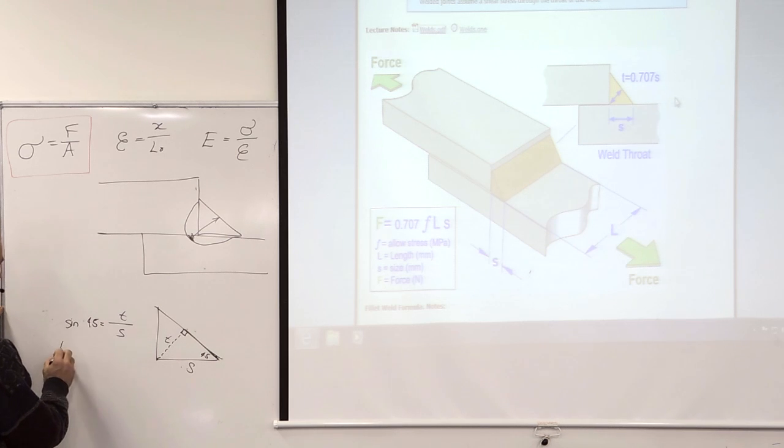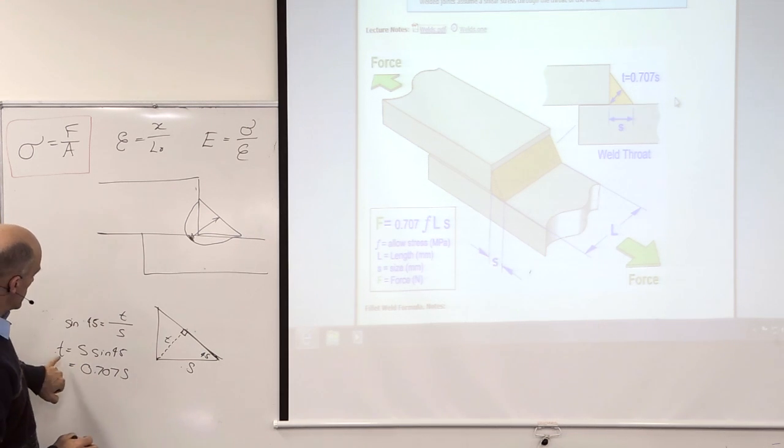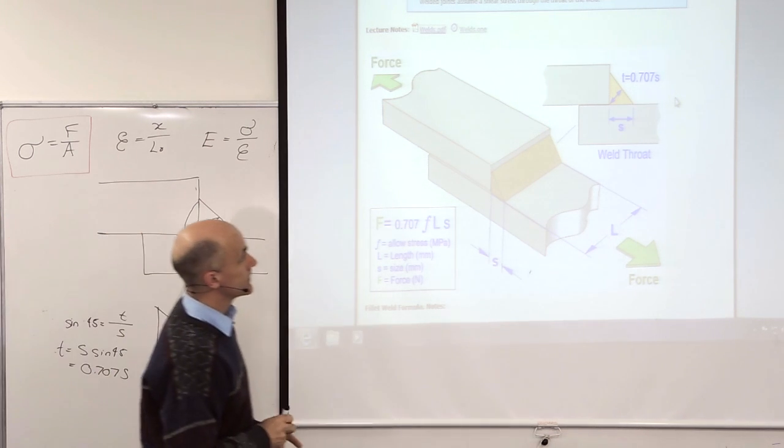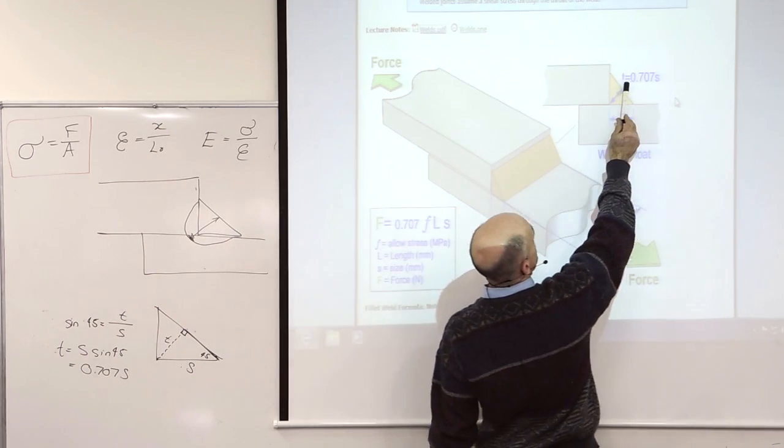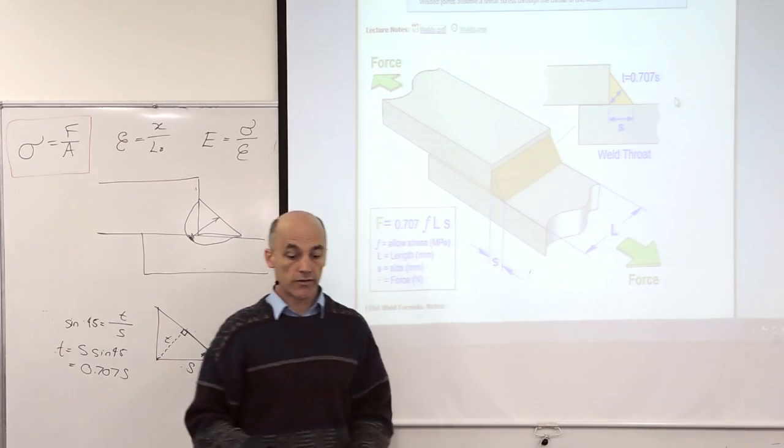And we're trying to find T. So T equals S sine 45. And sine 45 is 0.707 S. So that's where T equals 0.707 S. T equals 0.707 S from sine 45.